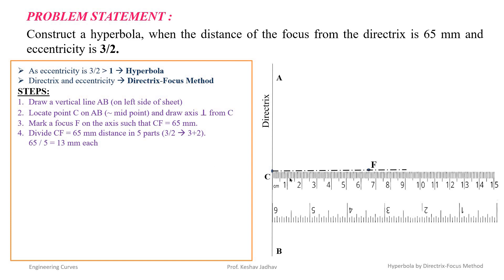Now we have to divide CF into a number of parts. How to decide the number of divisions is based on eccentricity — the number of divisions equals the numerator plus the denominator of the eccentricity value. Here eccentricity is 3 by 2, so the number of divisions equals 3 plus 2, that is 5. CF equals 65 mm, so we can easily divide it into 5 parts of 13 mm each.